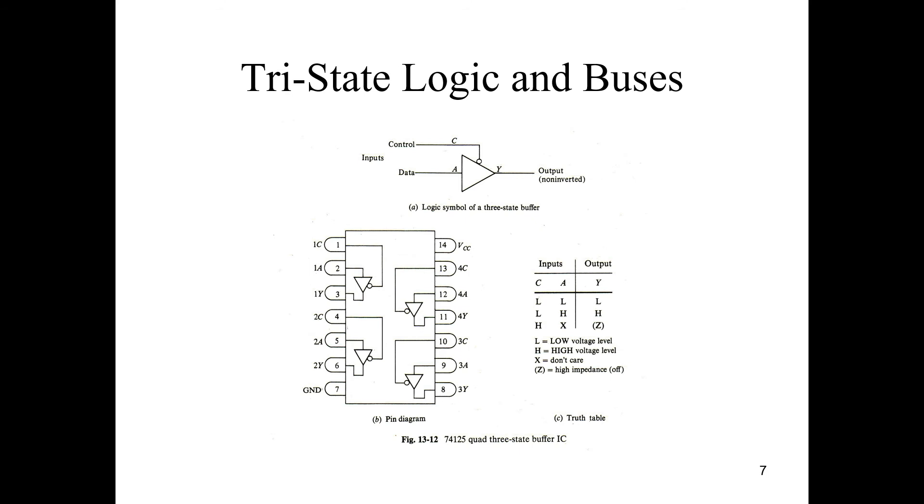Here is the logical symbol for a three-state bus buffer. The inputs here we have a control signal, we have data A, and the output Y which is not inverted. L stands for low voltage level, H stands for high voltage level, X equals don't care, and Z equals high impedance state. This is the pin diagram for three-state logic and buses.